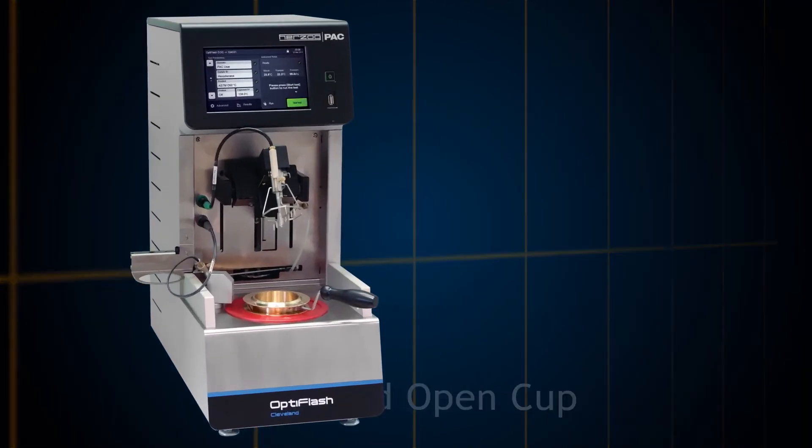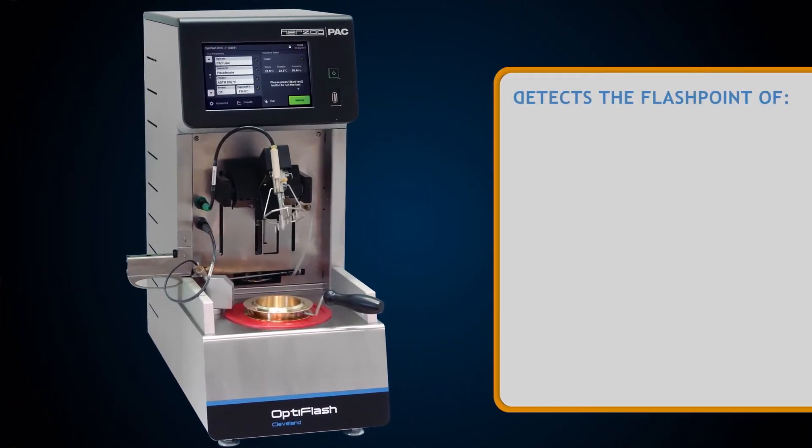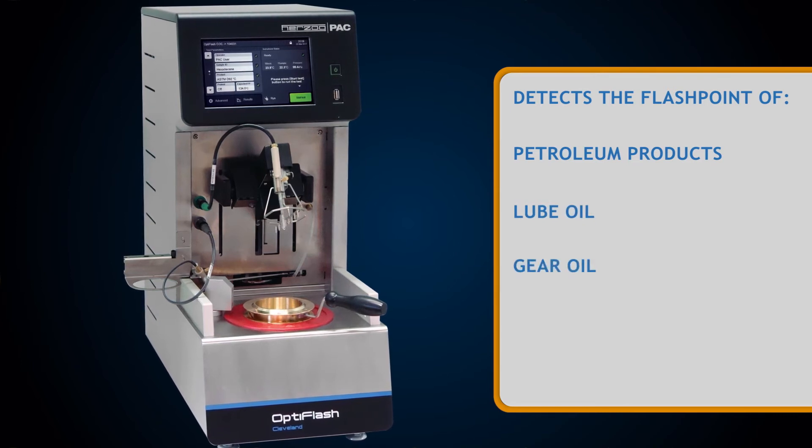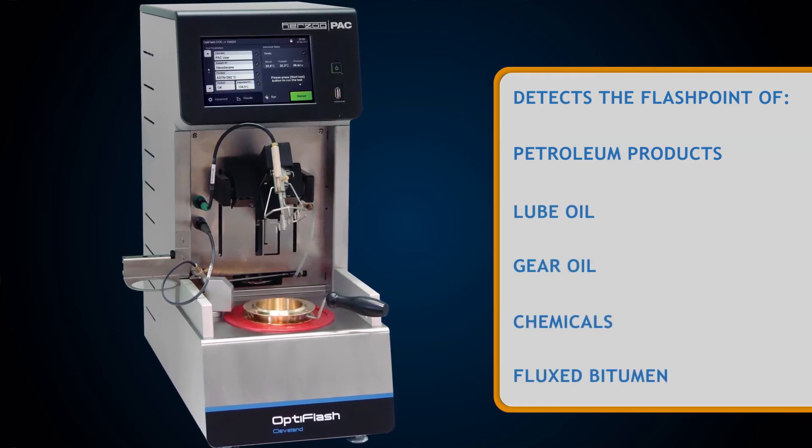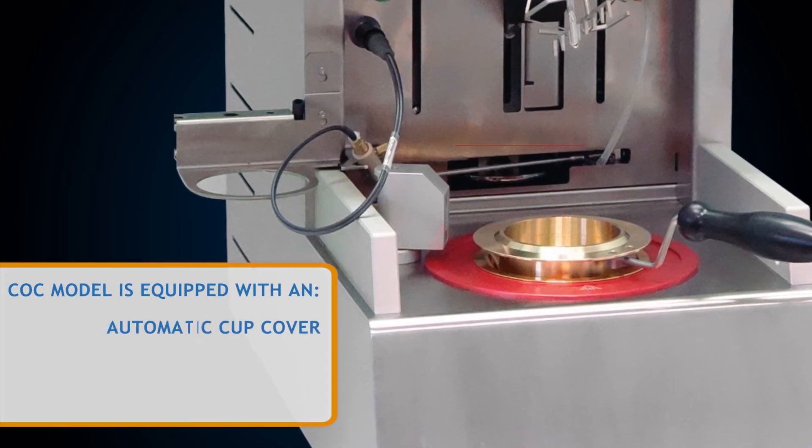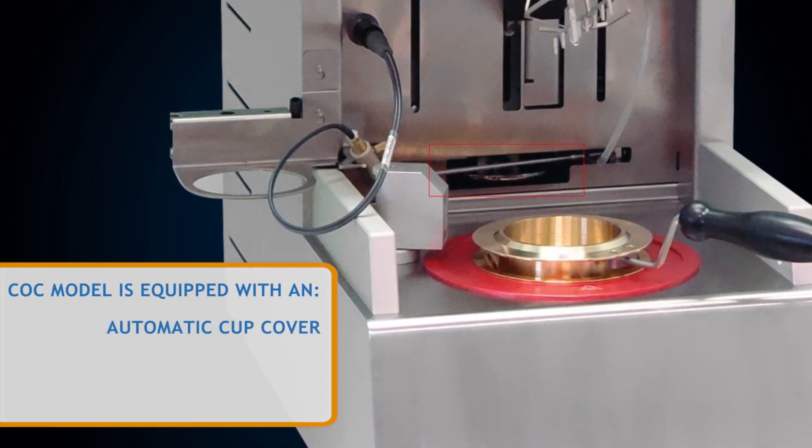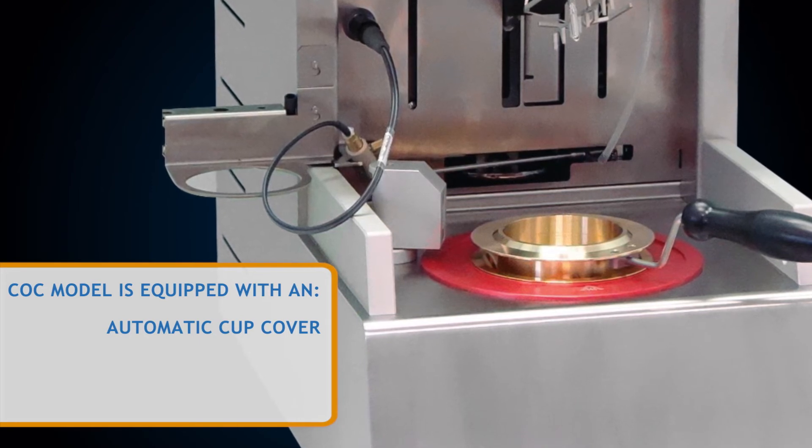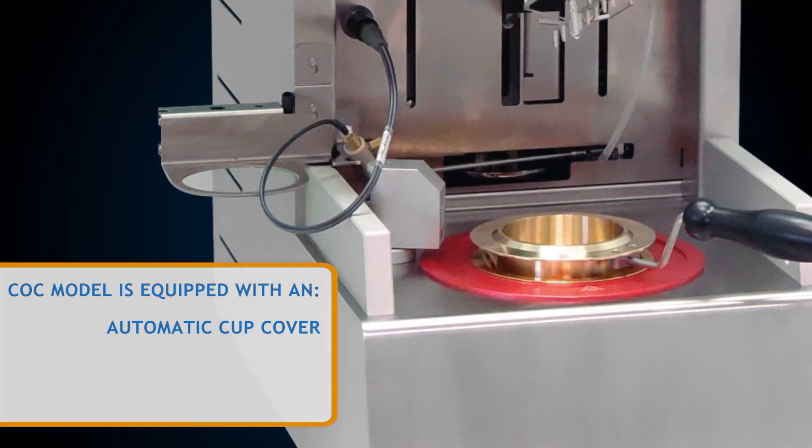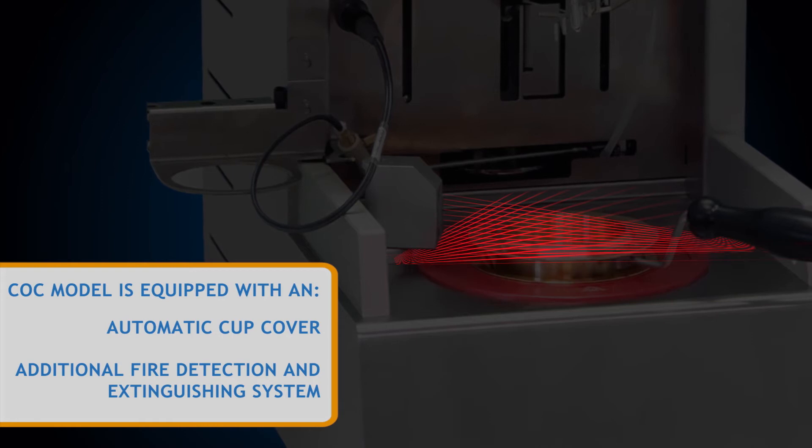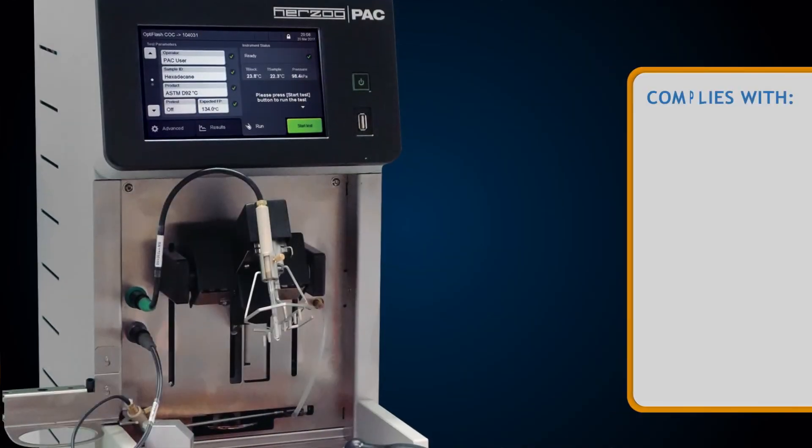The OptiFlash Cleveland Open Cup model accurately detects a flashpoint of petroleum products, lube oil, gear oil, chemicals, and flux-pitamin. The OptiFlash COC model is equipped with an automatic cup cover to stop any possible fires after a fire point and to stop vapors from escaping at the end of the test. OptiFlash COC is also equipped with an additional fire detection and extinguishing system, which can stop any abnormal fires during the test. It complies with the following standards.